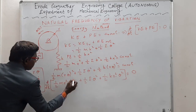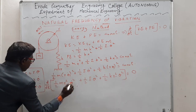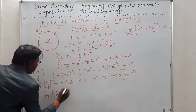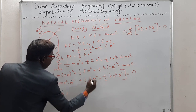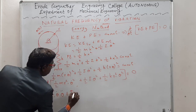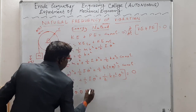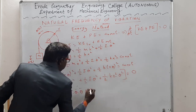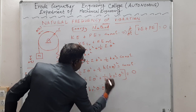Upon differentiation, θ̇² comes out as 2θ̇·θ̈, so 2 and 1/2 cancel. The first term becomes mr²·θ̇·θ̈. Similarly, the second term gives Iθ̇·θ̈ after differentiation. For the third term, the 2 from differentiating θ² and the 1/2 cancel, leaving kr²·θ·θ̇ equal to zero.